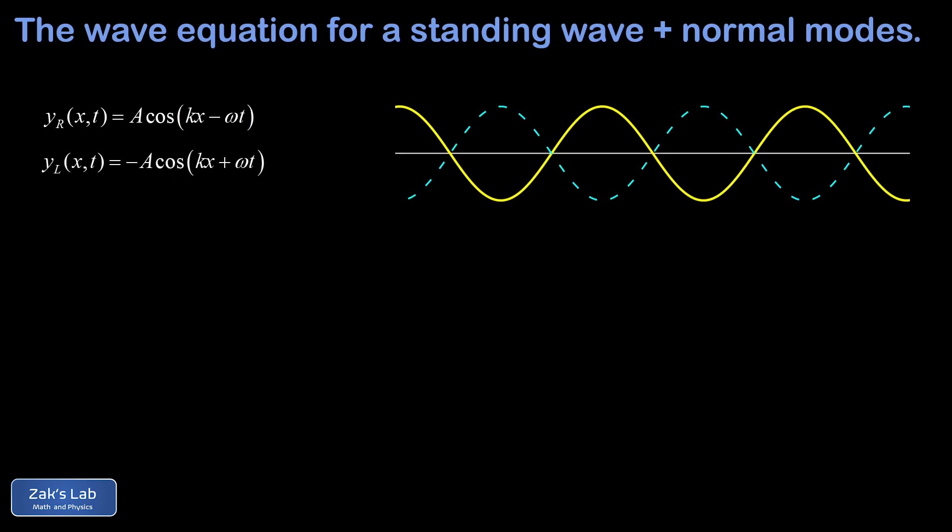After making this replacement, we can add the two waves yr and yl. So this is a superposition of the rightward wave and its leftward reflection. So we have A cos(kx - ωt) - A cos(kx + ωt).